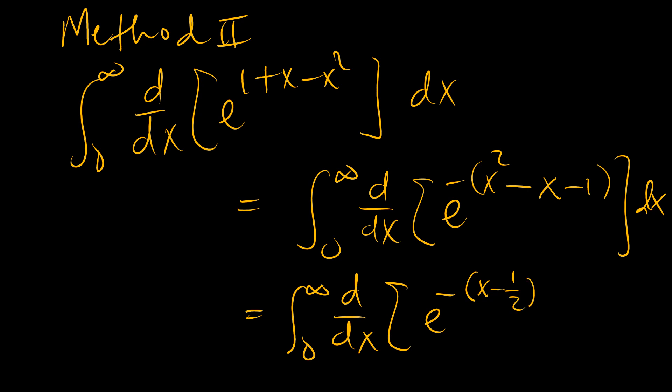So x minus a half squared, when you, so x minus a half squared is the same as x squared minus x plus a quarter. Now we want to remove this quarter here. When we have this sign here, it becomes a negative, so we're going to have to add a quarter to that negative to remove it. And then we're going to add this one here. A quarter plus one is going to be five over four, so our integral now becomes...